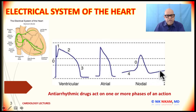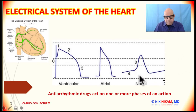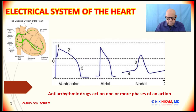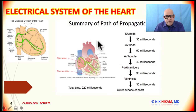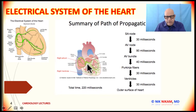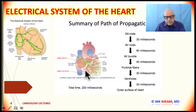Contrast this with the sinus node action potential, where the resting membrane potential, instead of being constant, gradually comes up to a threshold at which time there is a spontaneous depolarization. As a result, the sinus node is able to activate itself at a constant rate. That is one of the important aspects of the sinus node and AV node action potential.